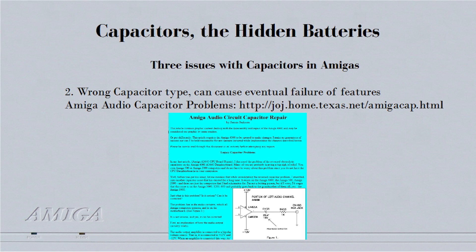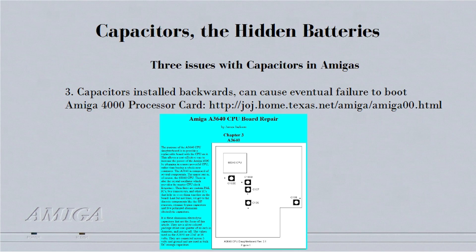There are other things in there, and that's these capacitors. There's one instance where there's a wrong capacitor type — that's the audio circuit. They discovered it in the 4000. It's probably in every Amiga, and it'll eventually cause audio to go out. All you have to do to get your audio back is replace those capacitors with the right ones.